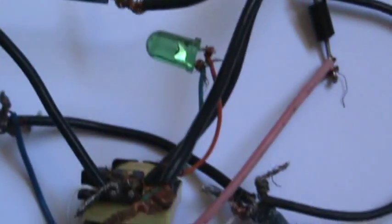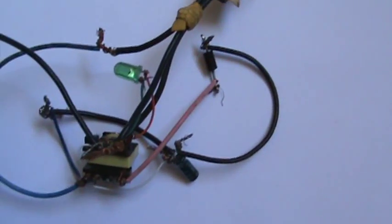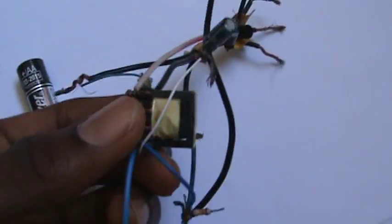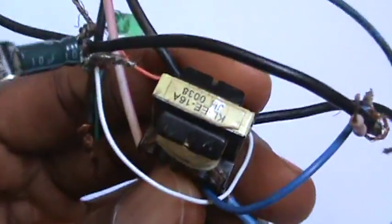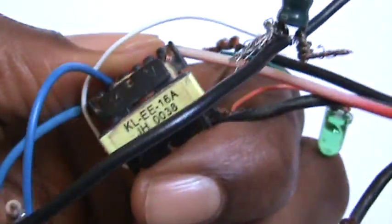And there are a lot of Joule Thief designs on the web, but this one I like because if you use a different transformer from the one I'm using now, you can actually get 200 to 300 volts from a circuit like it.